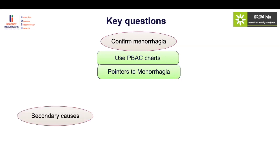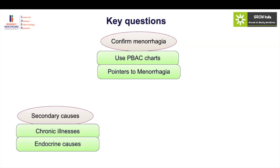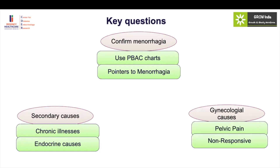The other important step is to rule out secondary causes — very importantly, chronic diseases and endocrine diseases. For a core gynecological cause of menorrhagia, pain is a very important history. If menorrhagia is associated with pain and not improving, then there is probably a gynecological cause of the menorrhagia.